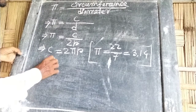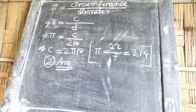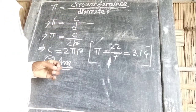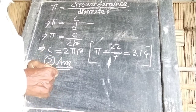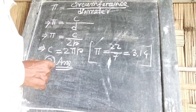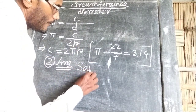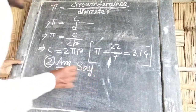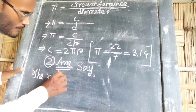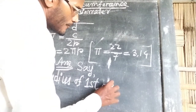Question 2: The radii of two circles are respectively 8 cm and 6 cm. Find the radius of a new circle whose area is equal to the sum of the areas of the two given circles. We need to find the radius of the new circle.